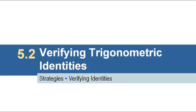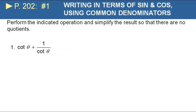Hi everybody. In this section we're going to look at verifying trig identities, and I'm going to give you some strategies for verifying these identities. We're going to do several examples together. Here's our first one — we're actually not verifying an identity yet, we're just practicing simplifying expressions, very much like what we saw in the last section: perform the indicated operation and simplify so that there are no quotients.